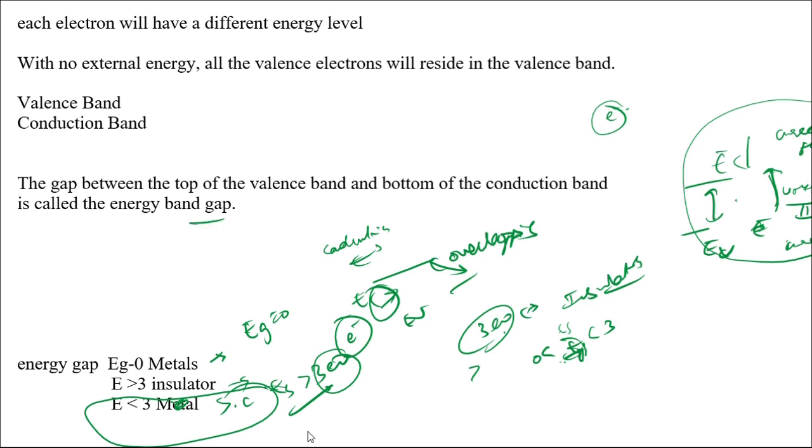The definition of energy band gap is: the gap between the top of the valence band and the bottom of the conduction band.